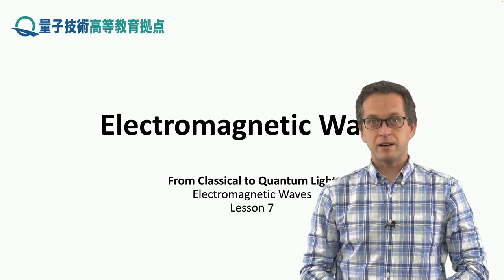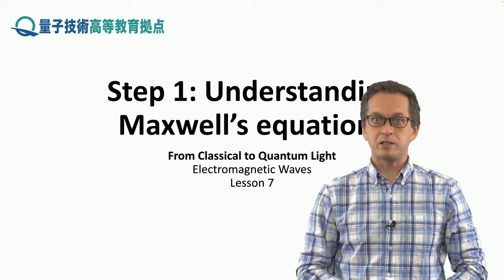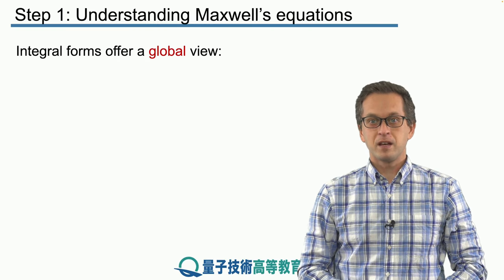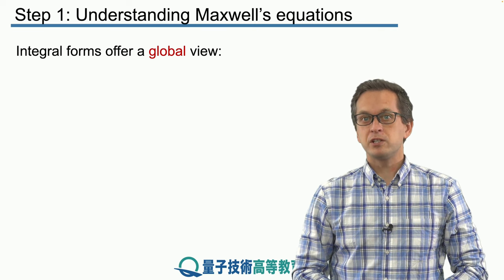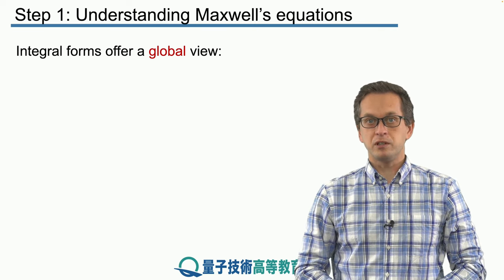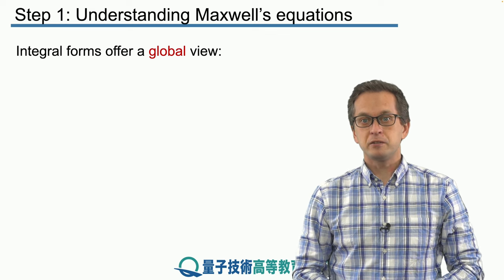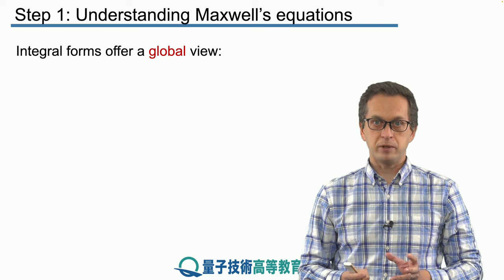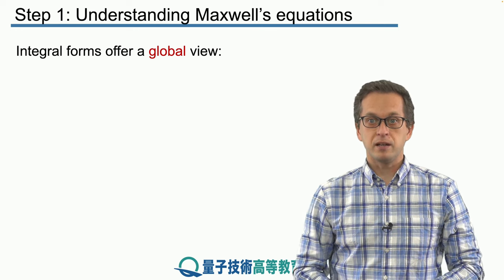So let's start by reviewing our understanding of Maxwell's equations. We derived Maxwell's equations in two very different forms. One was the integral form, and the way to understand this integral form is that it offers a global view of what is happening with the electric and magnetic field.